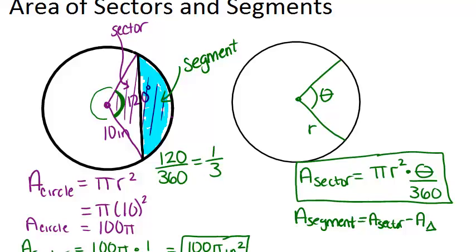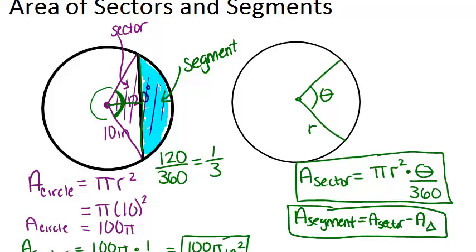Remember, for the area of a triangle, you need to do base times height divided by two, so you need to know the base and the height. But that's the idea: if you know the area of the sector and you know the area of the triangle, you can subtract those to find the area of the segment. And in this picture, this would be the segment.